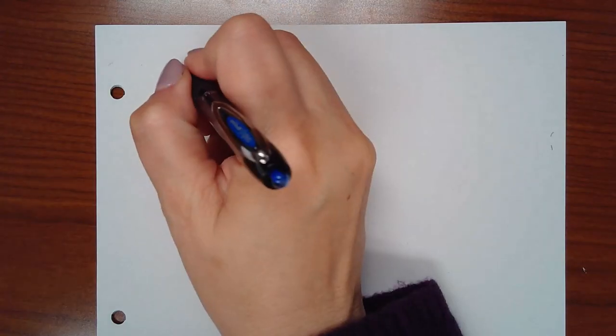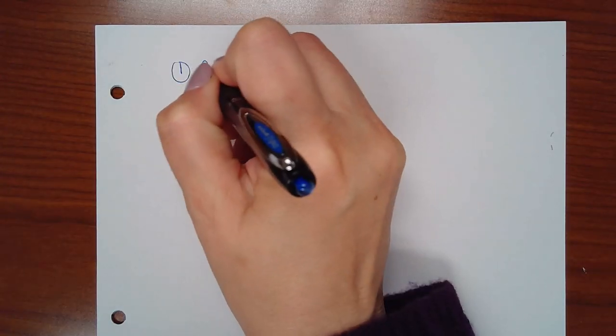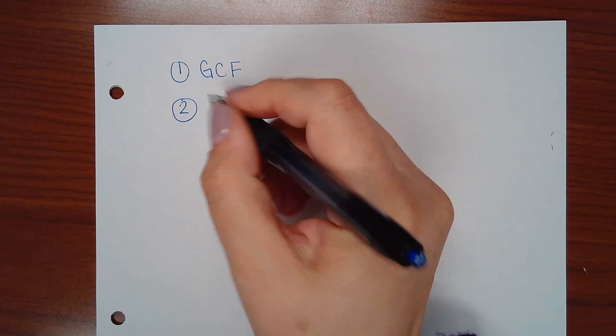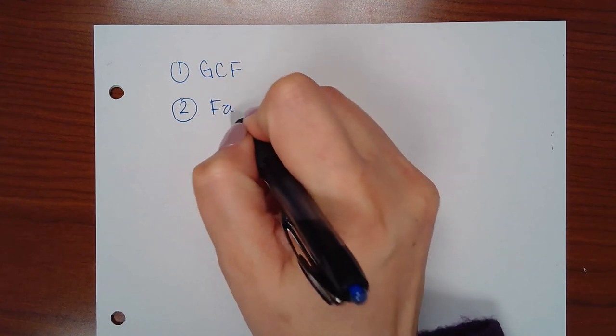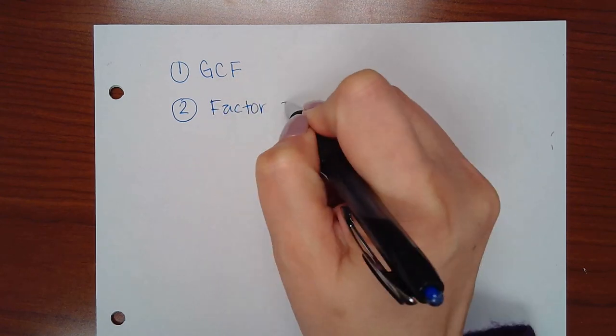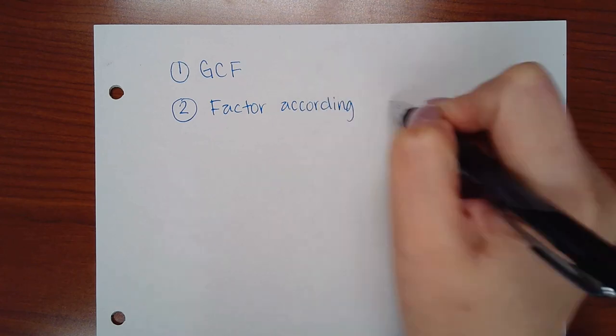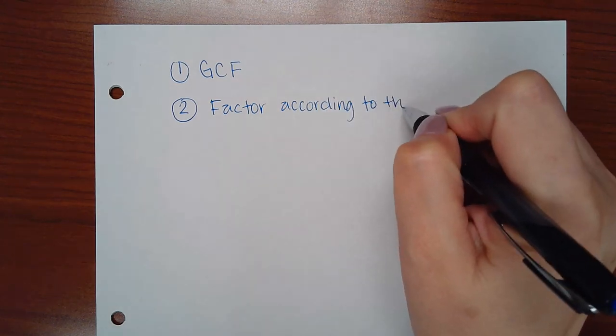This video is for the 320 course and we're going to talk about factoring. When it comes to factoring there are essentially three steps. Step one is to always factor out the greatest common factor. Step two is to factor according to the number of terms.